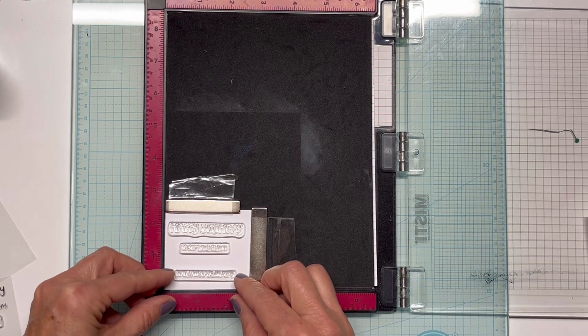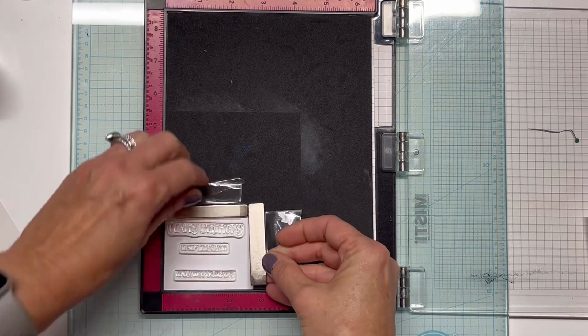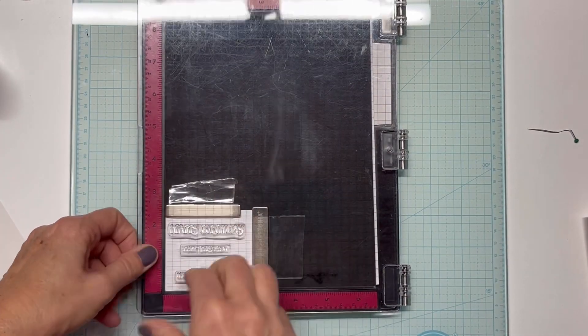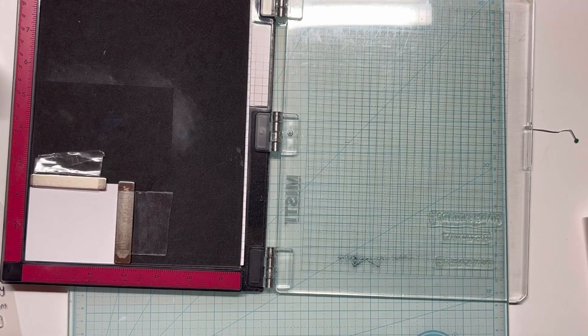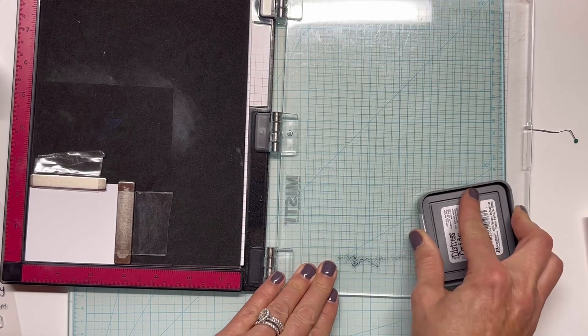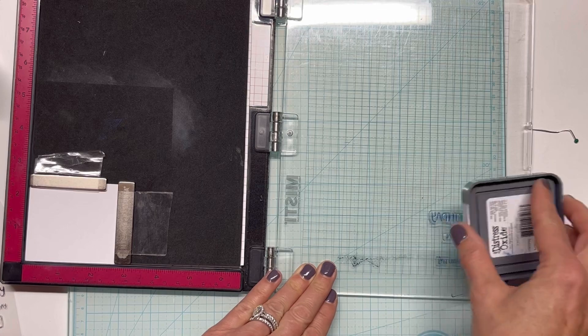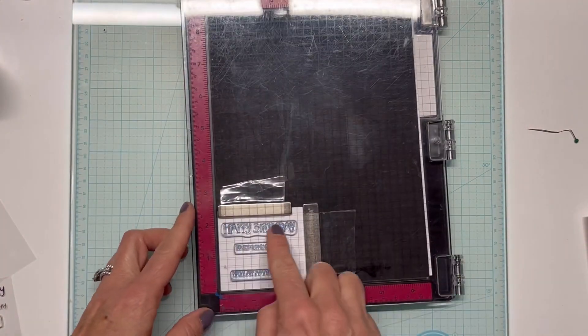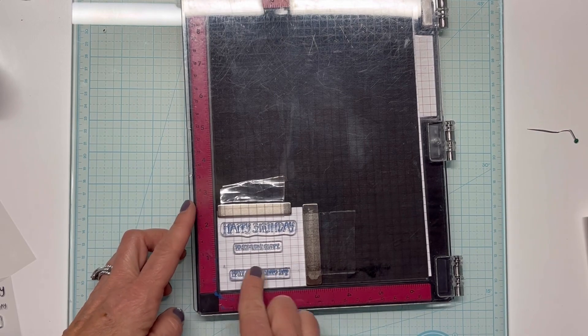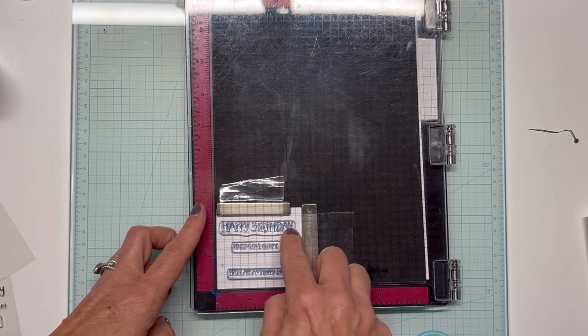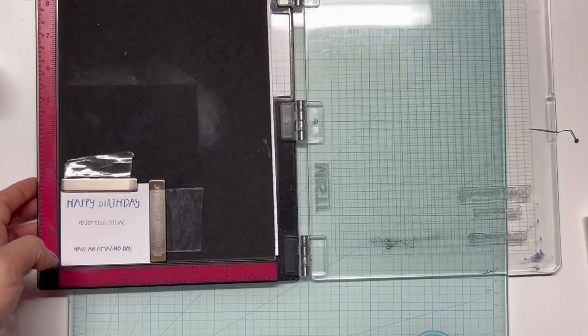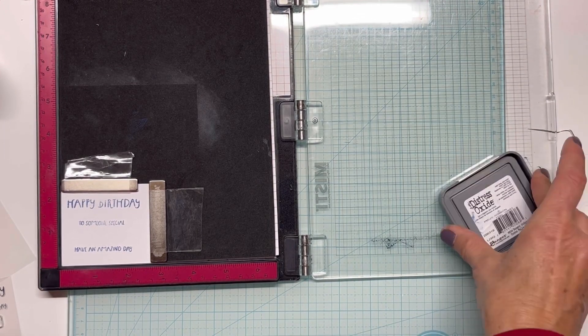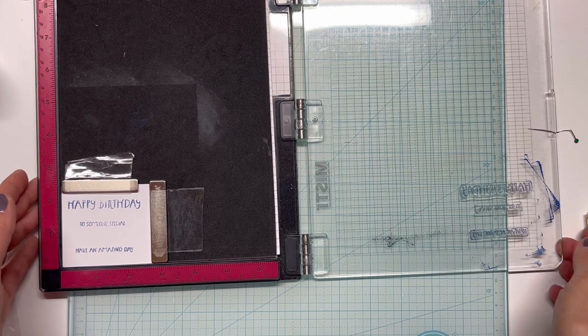I'm going to do two of them together on the front and then one on the inside, so I'm just lining them up so that I can work with that. Now for this I'm going to use my Distress Oxide Prized Ribbon and get it stamped down. It'll take multiple stampings for this because I didn't condition them.